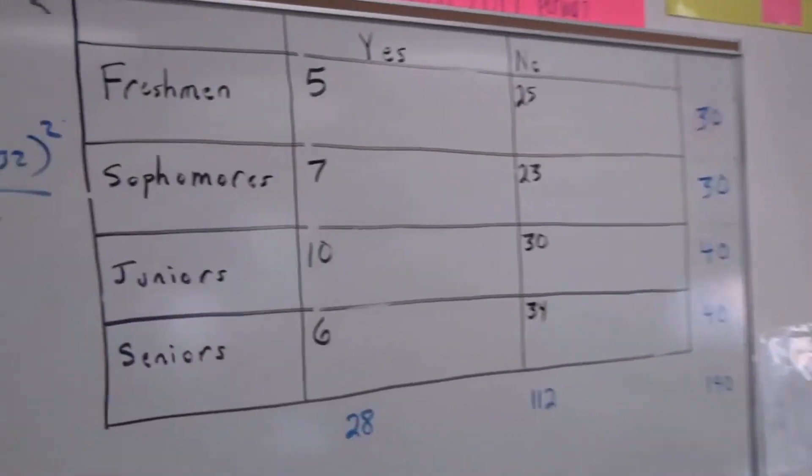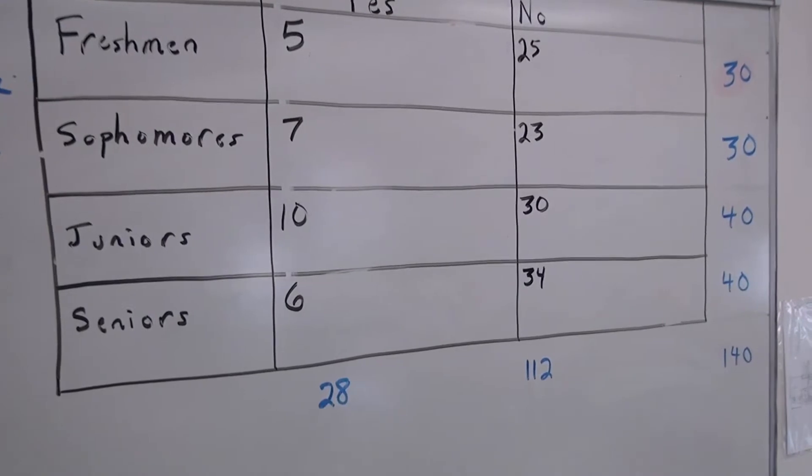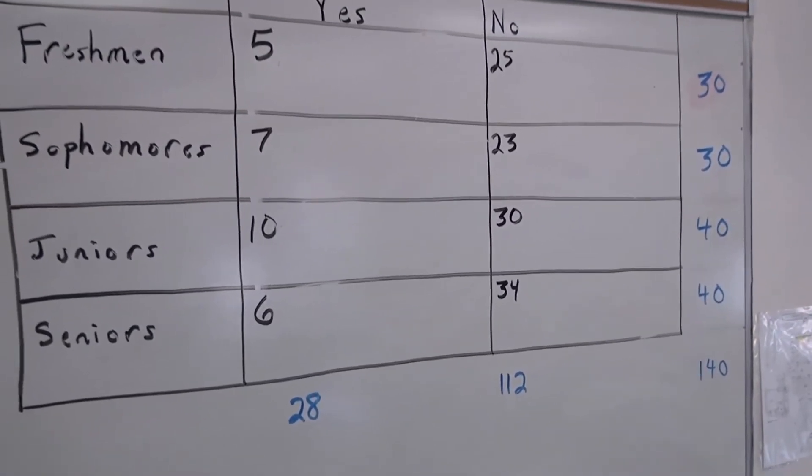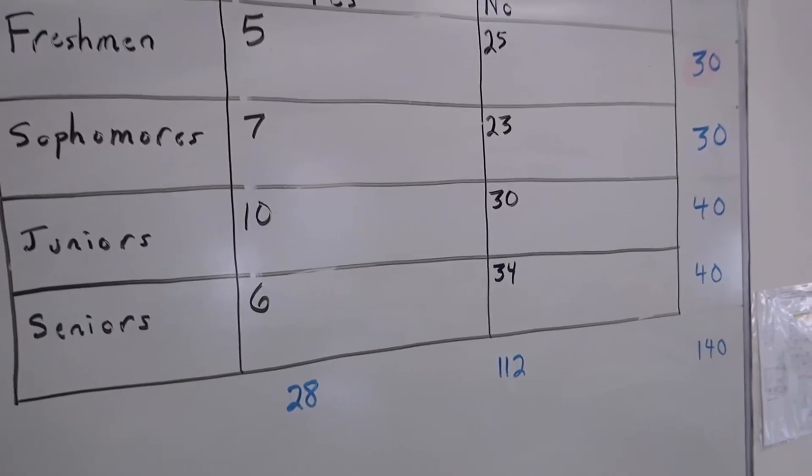Now we need to go back to the board and get our expected counts using the formula. We see our sample sizes on the marginal distribution on the right are 30, 30, 40, and 40 for a total of 140 in the sample.